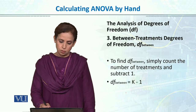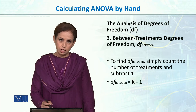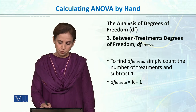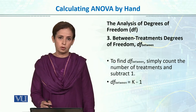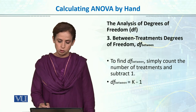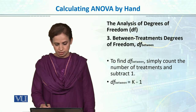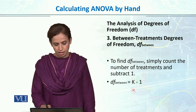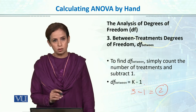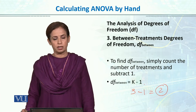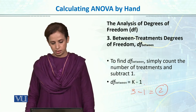For between groups, degrees of freedom equals k minus 1. We have 3 groups, so between groups degrees of freedom equals 3 minus 1, which equals 2.